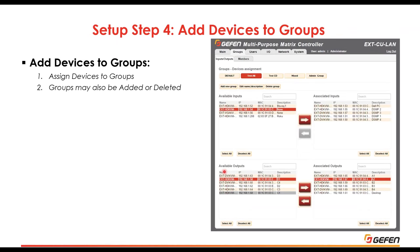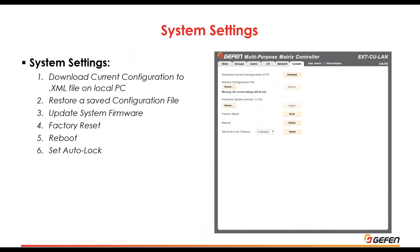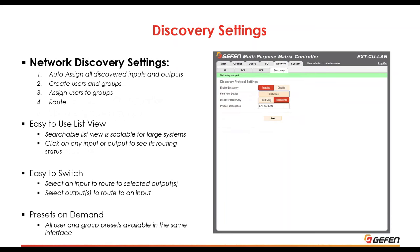Once devices and users are added to the group, that group has complete functionality within the system. You also have access to network settings — setting up system IP addresses, TCP and UDP addresses, and controlling discovery. The CU LAN also lets you download your entire configuration to an XML file so you can store and restore all system settings. From the same screen you can update system firmware, do a factory reset, and manage discovery settings to find all devices on the network.